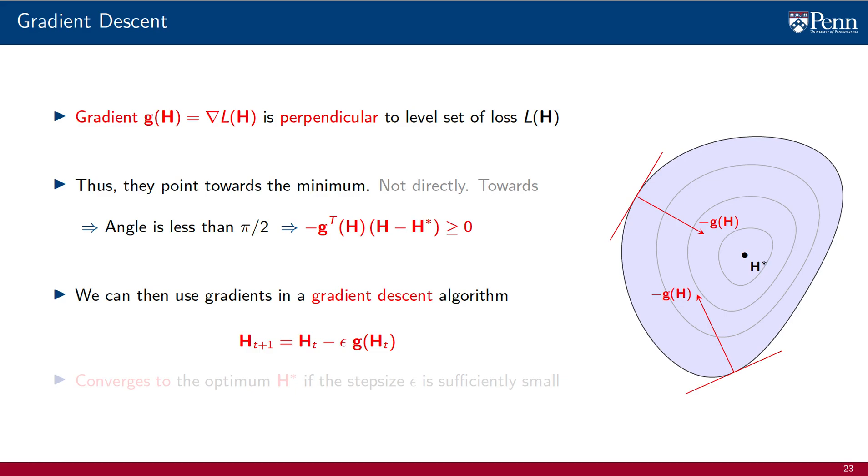Since the negative gradient points towards the minimum, h_{t+1} is closer to h star than h_t was if the step size is sufficiently small. Formalizing these observations, we can prove that iterates h_t converge to the optimum parameter h star, but we won't do that here.